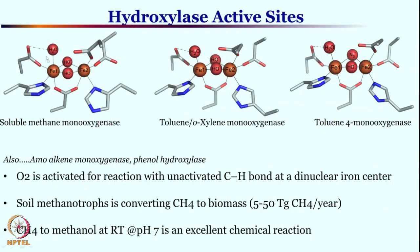Methane monooxygenase has a di-iron center. As you can see, two iron centers are bridged by two hydroxo moieties, and they are also linked by a carboxylate group. Each of the iron centers has a histidine unit, as you see on iron 1 and iron 2, and in addition there are also carboxylate linkages.